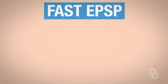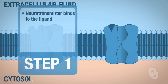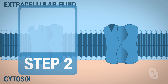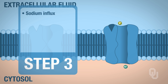Let's take a look at a fast excitatory postsynaptic potential. The goal of an EPSP is to depolarize the postsynaptic membrane. So in step one, the neurotransmitter binds to your ligand-gated channel. This is a fast response, so our receptor must be ionotropic, because only fast responses use ionotropic receptors. In step two, once the neurotransmitter binds to your ionotropic receptor, the channel opens. This is an ion channel — you have potassium moving out of the cell and sodium moving into the cell, both carrying positive charges. So in step three, we have sodium influx — sodium moving into the cell — and we have potassium efflux — potassium moving out of the cell.